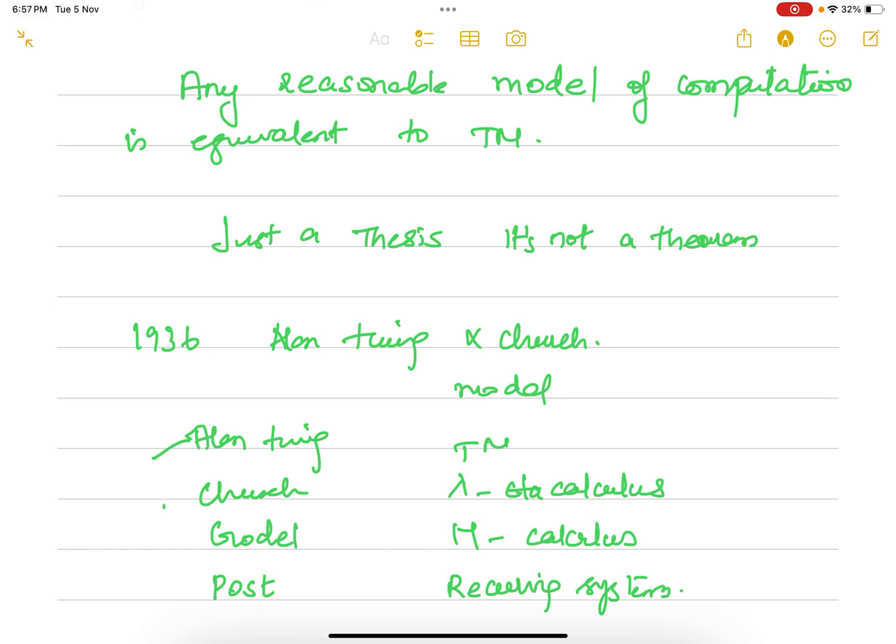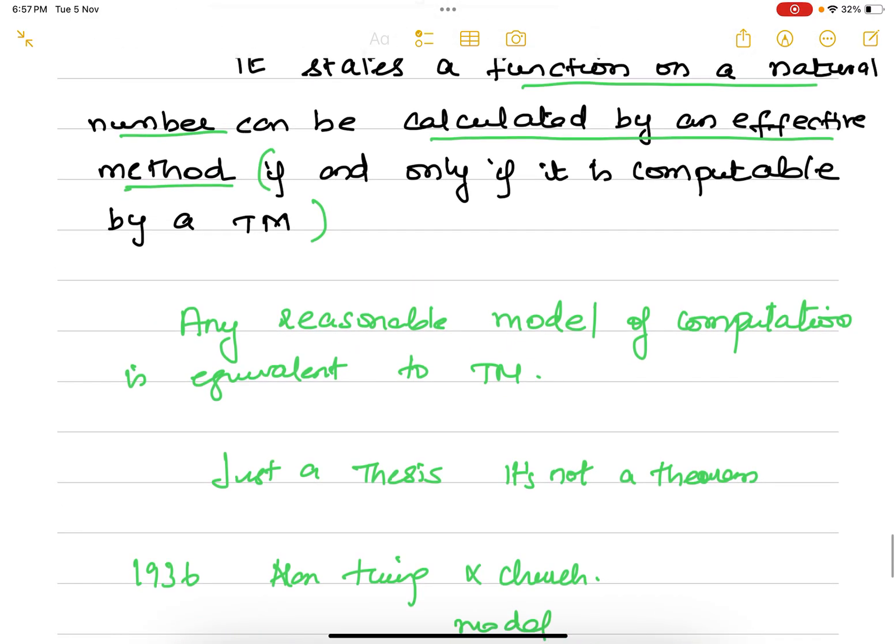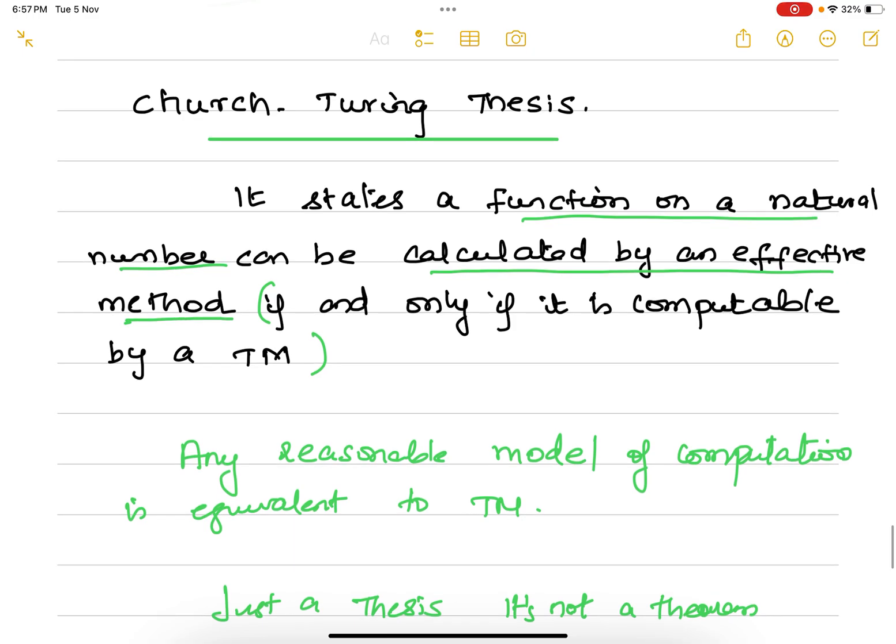All these mathematicians worked at different locations and they were trying to propose models that perform basic computations. Out of which the Alan Turing and Church models were very close, and with that they came into what is called as Church-Turing thesis.